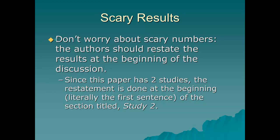The rest of the results are complex, and you shouldn't be expected to fully understand them until you take statistics. But don't worry, because in APA style the author should restate the results of the experiment at the beginning of the discussion. Since this paper has two studies, this restatement is done at the beginning — literally the first sentence — of the section titled Study 2. Go take a look at that sentence and see how they sum up the results of Study 1.